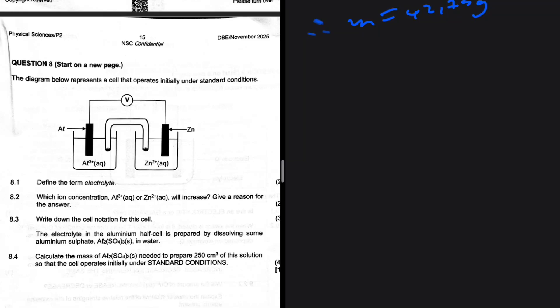8.4. Calculate the mass needed to prepare 250 cm³ of this solution so that the cell operates initially under standard conditions.